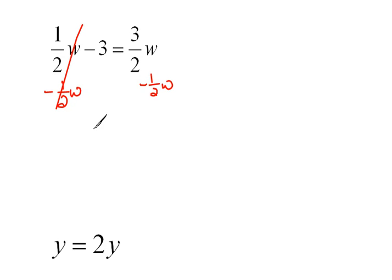So now on the left hand side of the equal sign, I have a negative 3. And on the right hand side of the equal sign, we have 3 halves minus 1 half would be 2 halves, which is 1 w. So we think the solution is w equals negative 3.